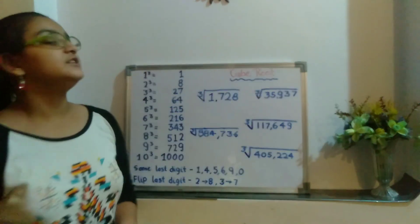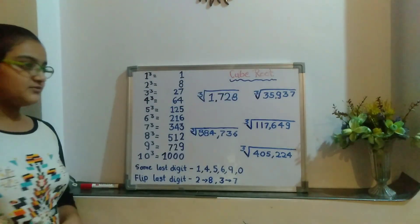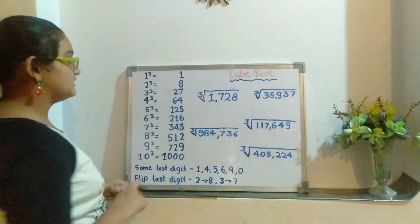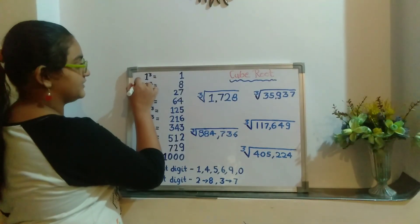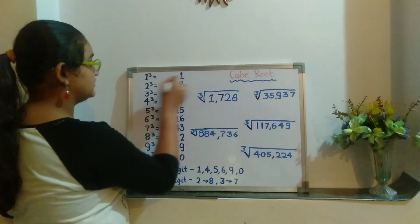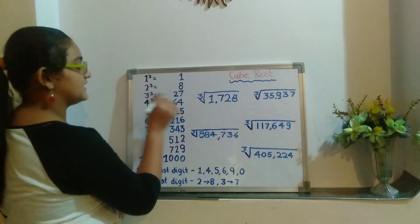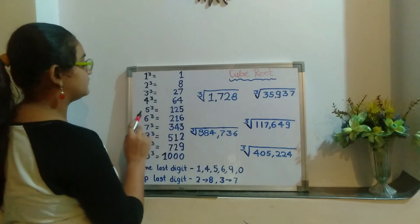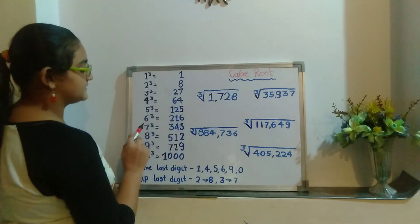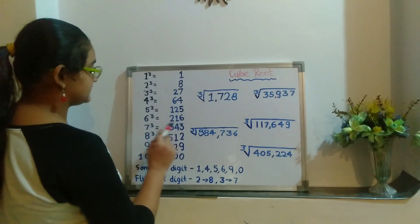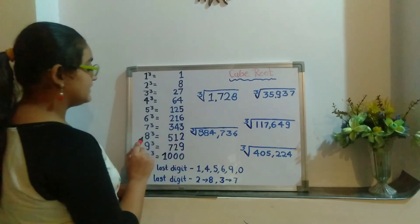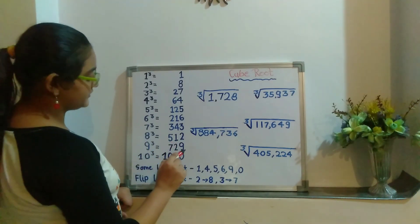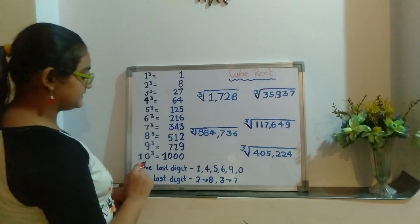To first get the cube root, you have to memorize cubes up to 10. 1 has cube 1, 2 has 8, 3 has 27, 4 has 64, 5 has 125, 6 has 216, 7 has 343, 8 has 512, 9 has 729, and 10 has 1000.